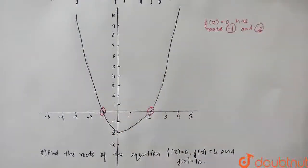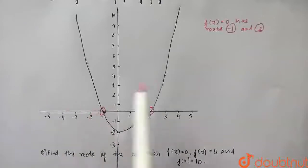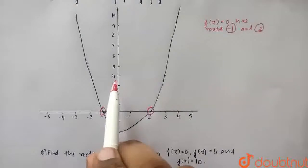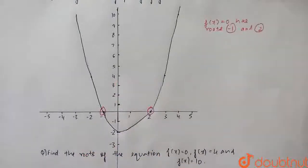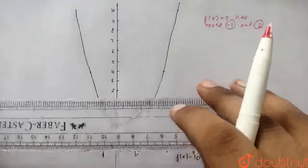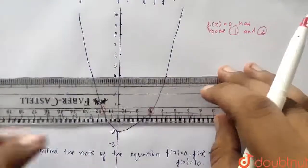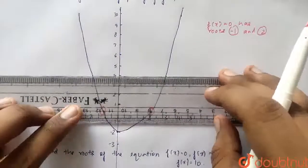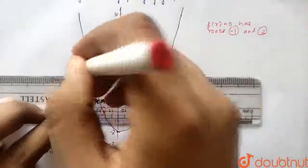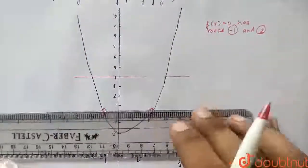Now, it is also given, we have to find the roots of f of x is equal to 4. So now, what we will do is, I will make a straight line parallel to x-axis on basically y is equal to 4. So therefore, y is equal to 4 will be this line. I will draw with a scale firstly. So I have drawn this line.